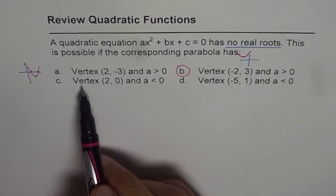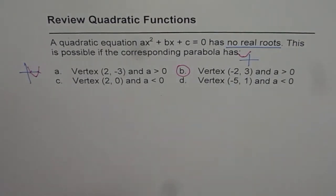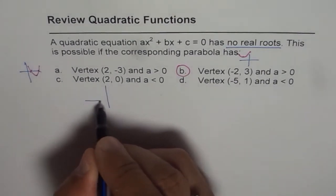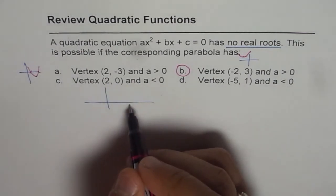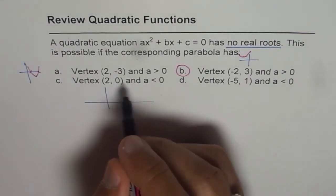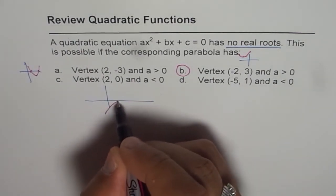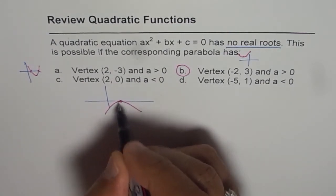Let's check the others. Vertex is (2, 0). (2, 0) is on the x-axis itself. And if a < 0, that means the parabola is opening downwards and (2, 0) will mean kind of like this. So there is a zero here.